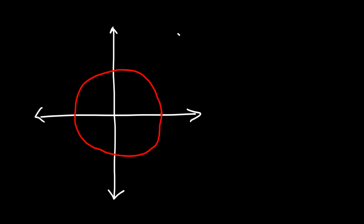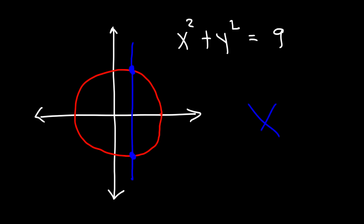What if we have a circle? The equation x squared plus y squared equals nine — is it a function? We can clearly see that it's not going to be a function, because it touches the vertical line at two points. Therefore that's not a function.